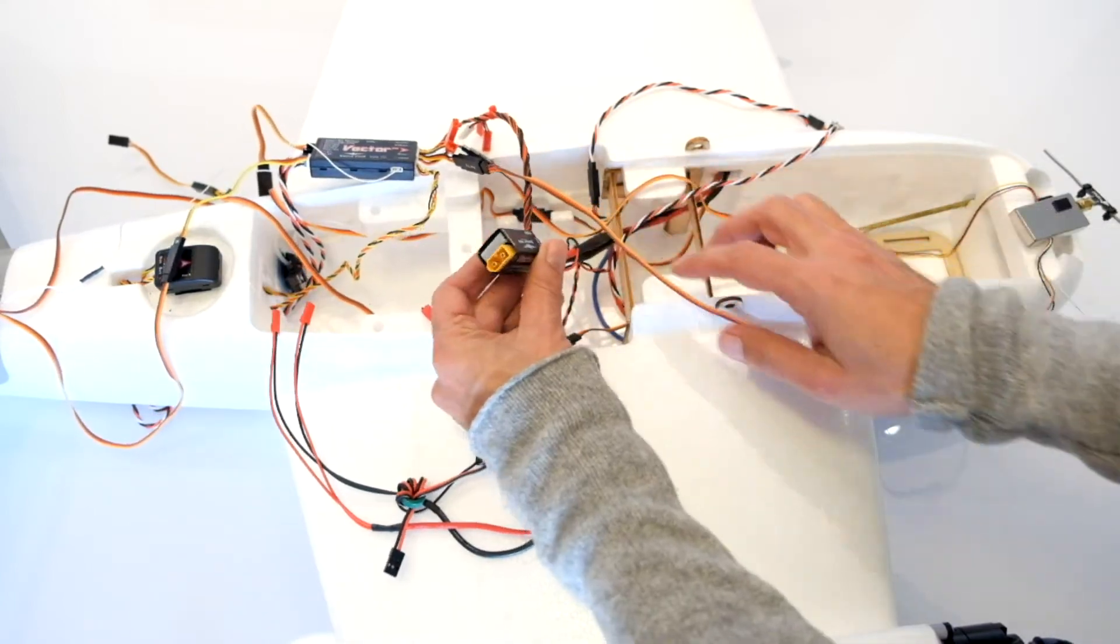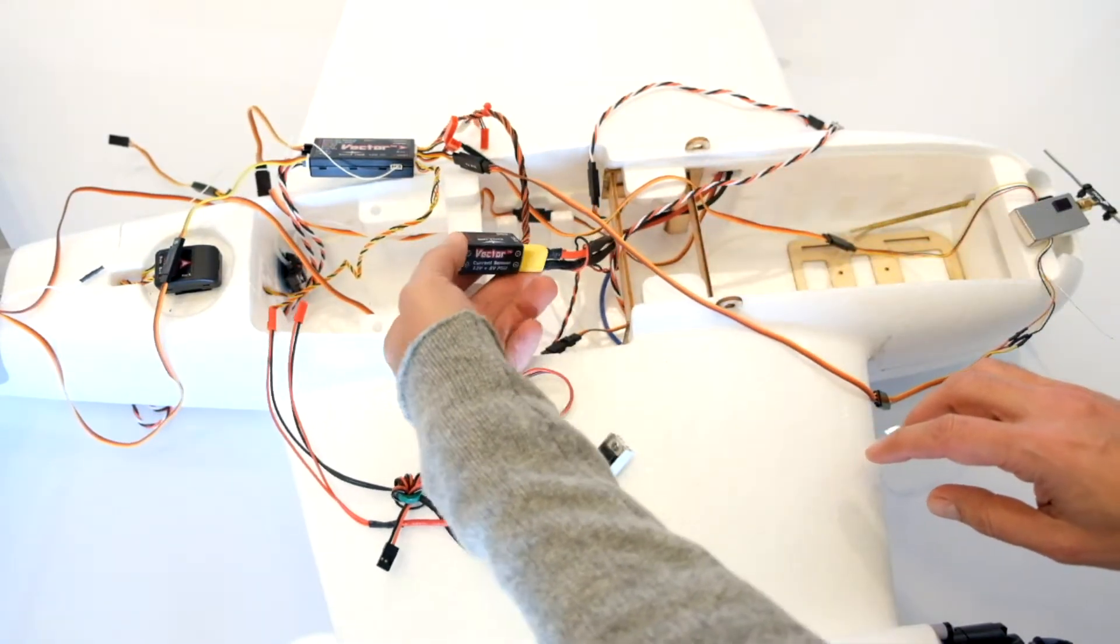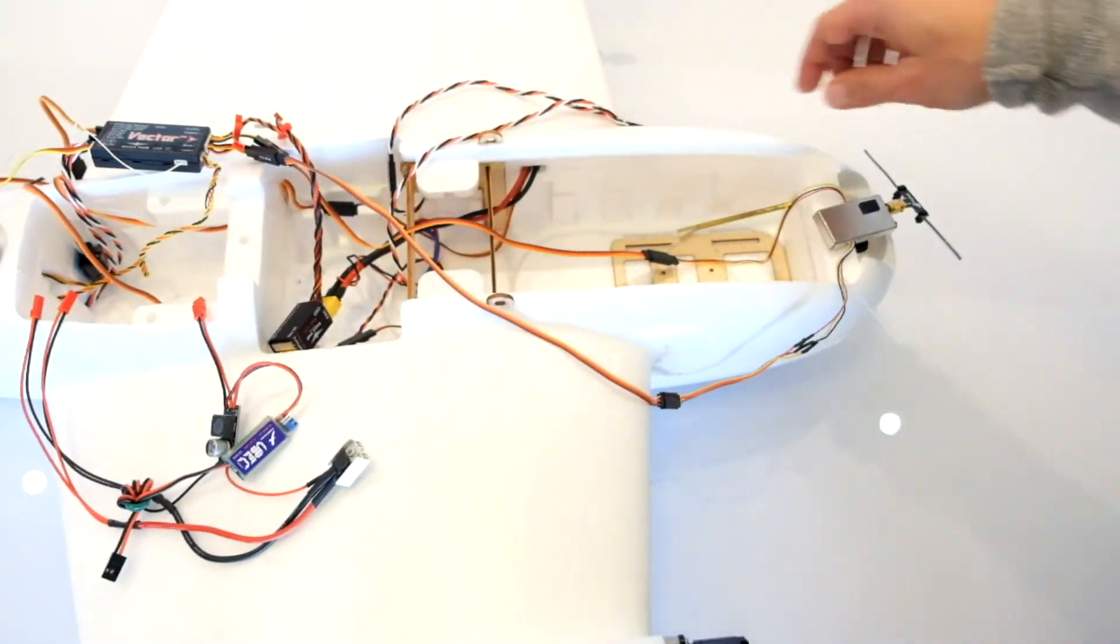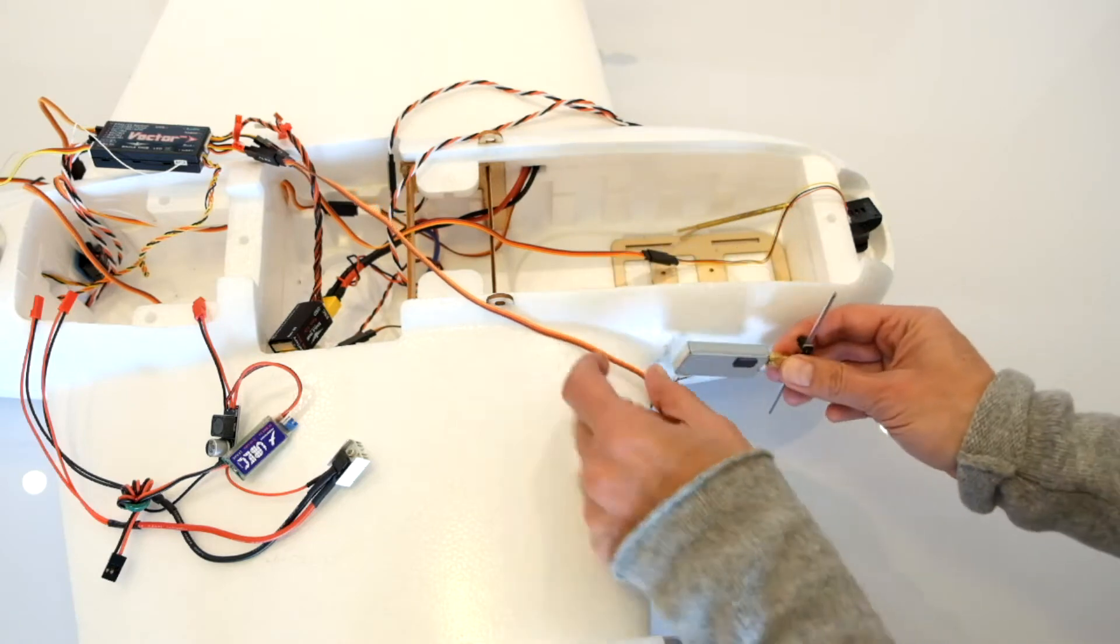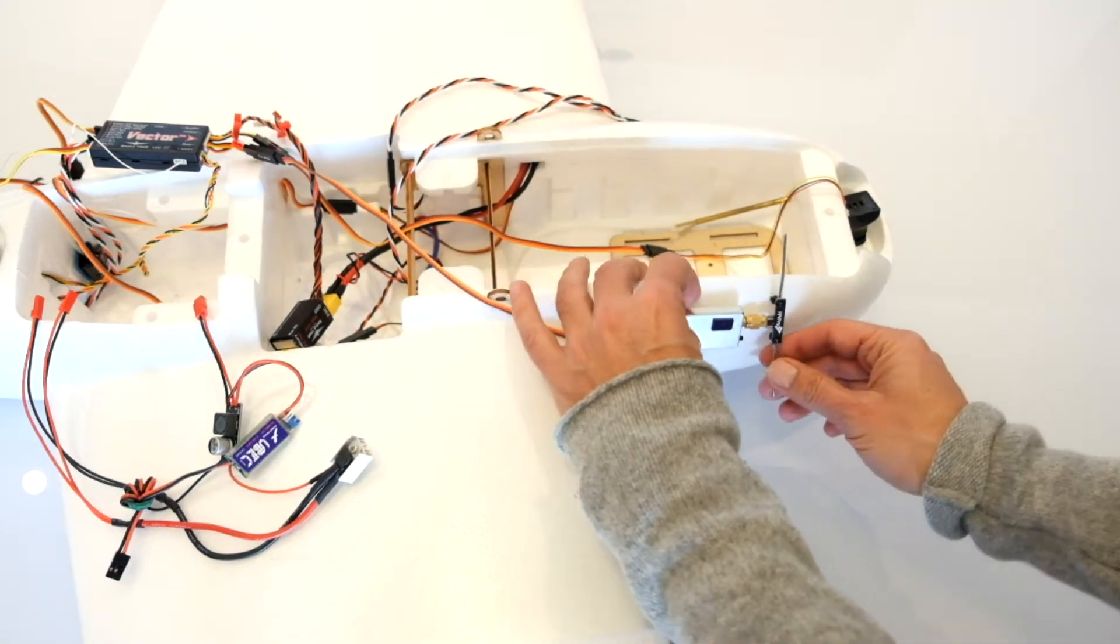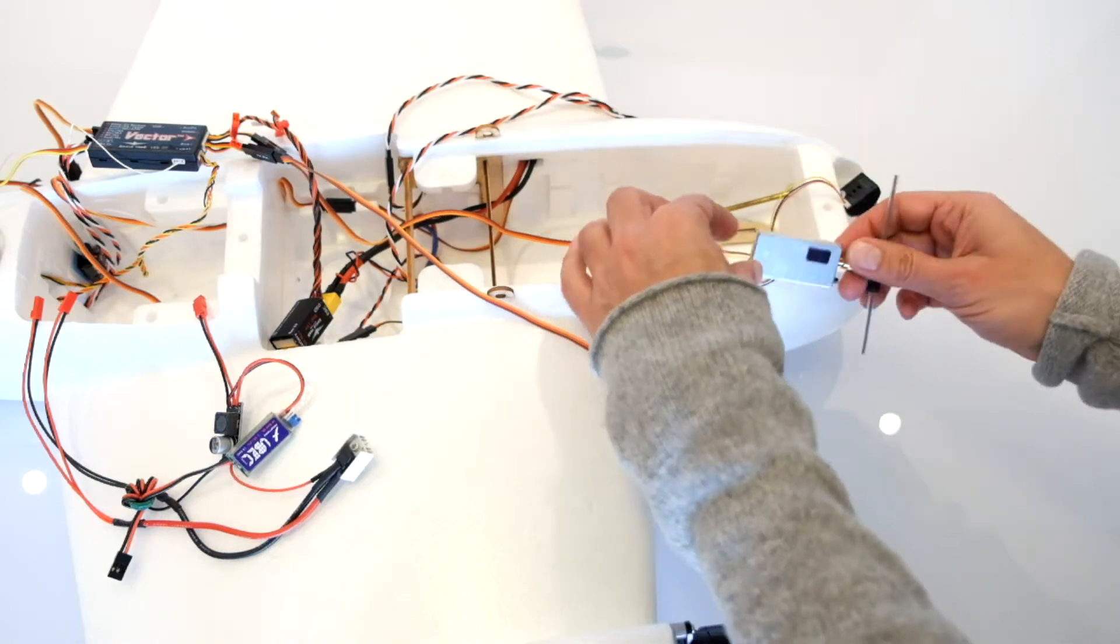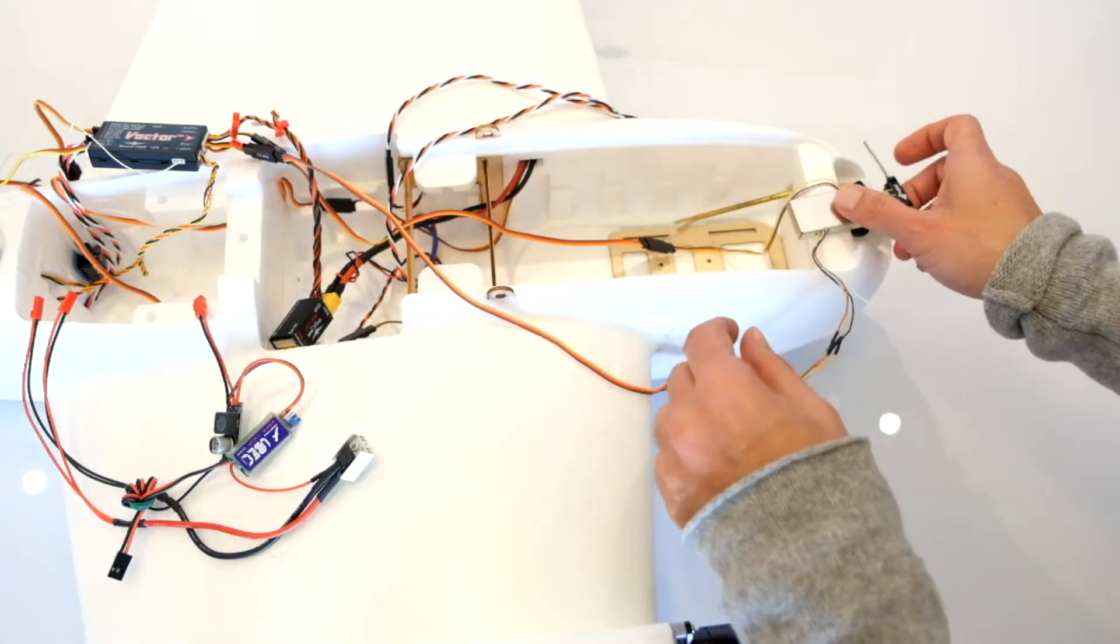This is the PSU, current sensor. And then here up front, this is the video transmitter, which I'm going to position right here. And here you see the camera.